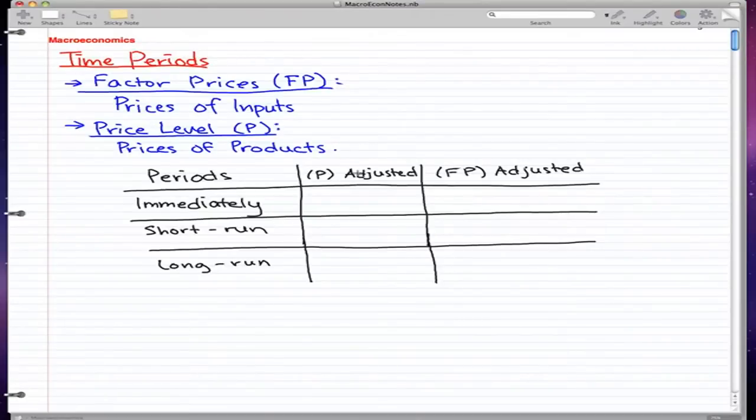We're going to be talking about time periods, factor prices, and price levels in this video. Factor prices (FP) are the prices of inputs - everything we need to produce a product like human labor, resources, and technology. Price level (P) is the prices of products.